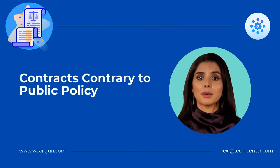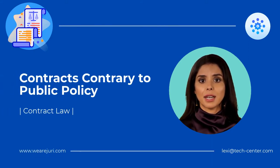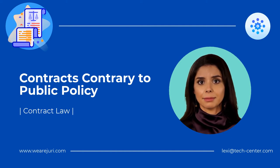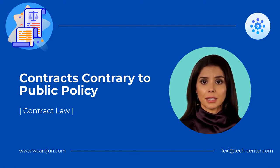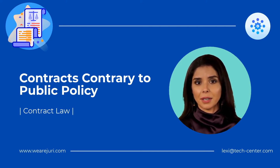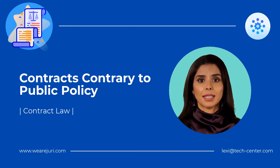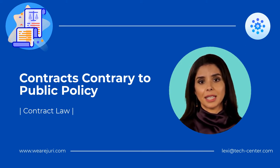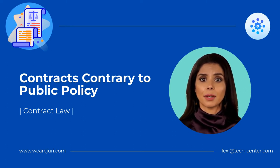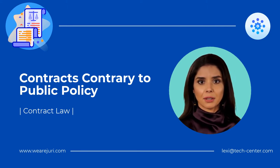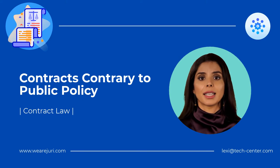Welcome to Contract Law's topic of Contracts Contrary to Public Policy. Let's begin. According to the doctrine of illegality, not all contracts are enforceable. The very purpose of the doctrine of illegality is to place substantial limitations upon the enforceability of particular contracts that either contain clauses encompassing illegal acts or clauses that are contrary to public policy. Some of the contracts contrary to public policy are the following.